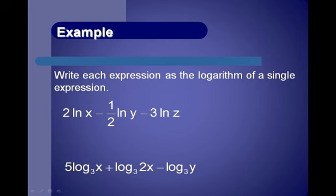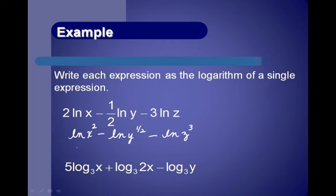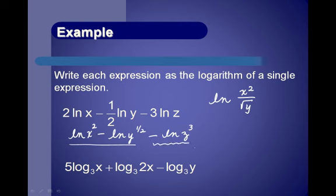Write each expression as a single logarithm. 2·ln(x) becomes ln(x^2). One-half times ln(y) — the coefficient becomes the exponent — and combined with ln(z^3) we get ln(z^3). For ln(x^2) − (1/2)·ln(y) − ln(z^3): this becomes ln(x^2) minus ln(y^(1/2)) minus ln(z^3). Since y^(1/2) is the square root of y and we divide by z^3, the simplified form is ln(x^2 / (√y · z^3)).